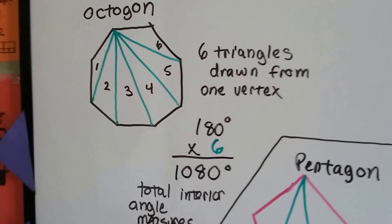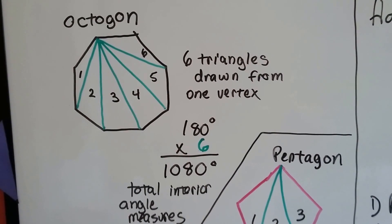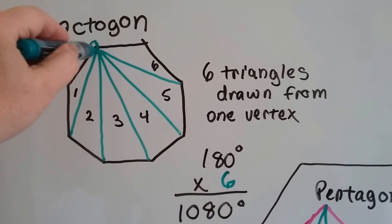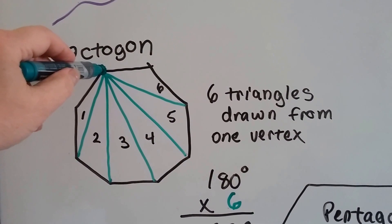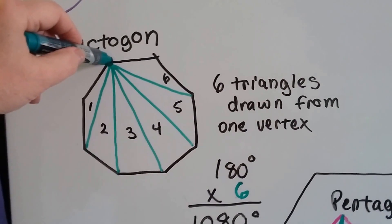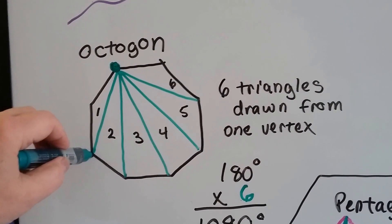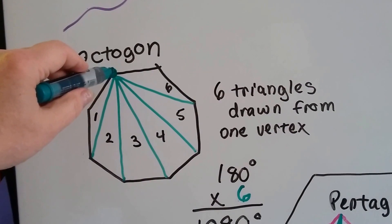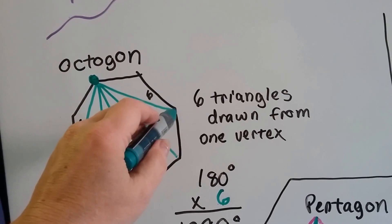So if we have an octagon, all we have to do is draw triangles inside of it. The way to do it is we pick a vertex first. I chose this vertex — it doesn't matter which one you choose. What I did was draw a line from the vertex I chose across, skipping a vertex, so that I could create a triangle here, and then I drew a line to each vertex after that, creating triangles.